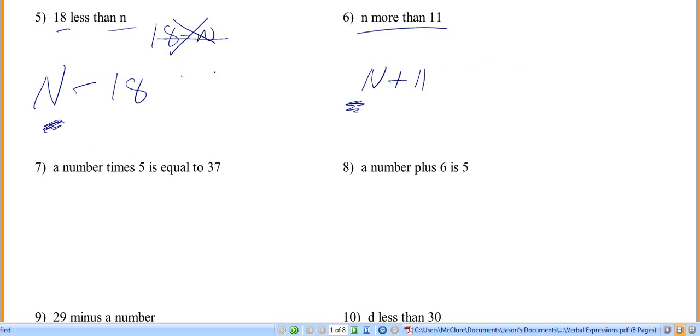Because they could have said, let's look at 5 another way. They could have said n less than 18, right? Well, if they did that, that would be 18 minus n. So these less than problems, this number here is going to go first. This number here is going to go second.